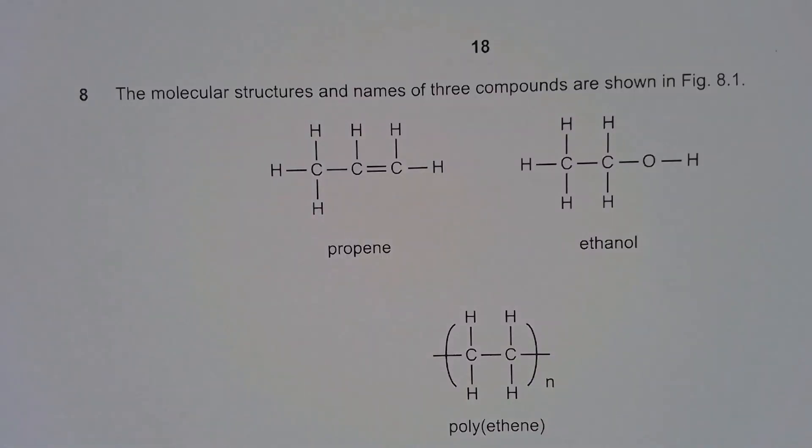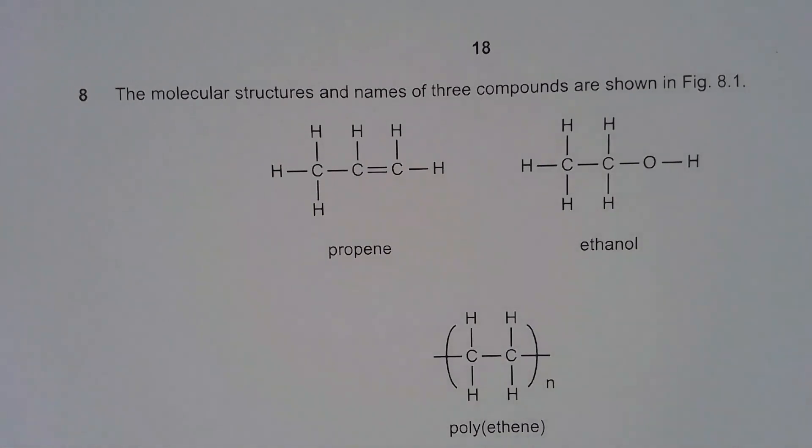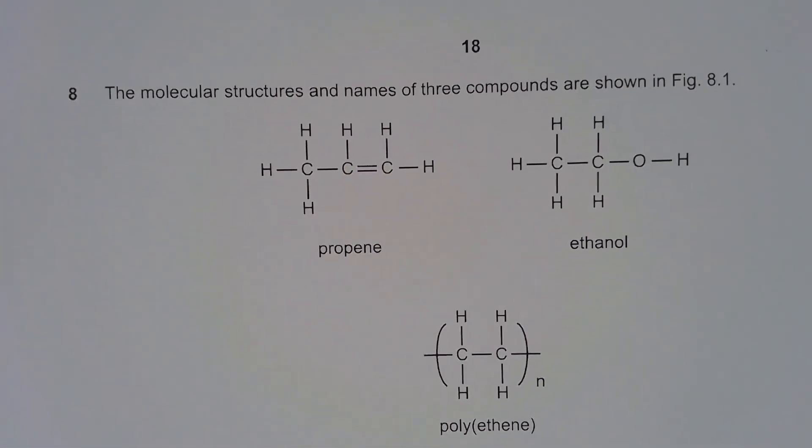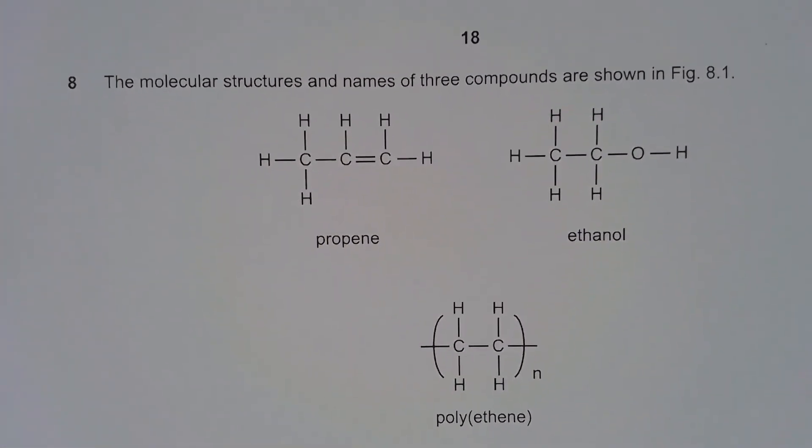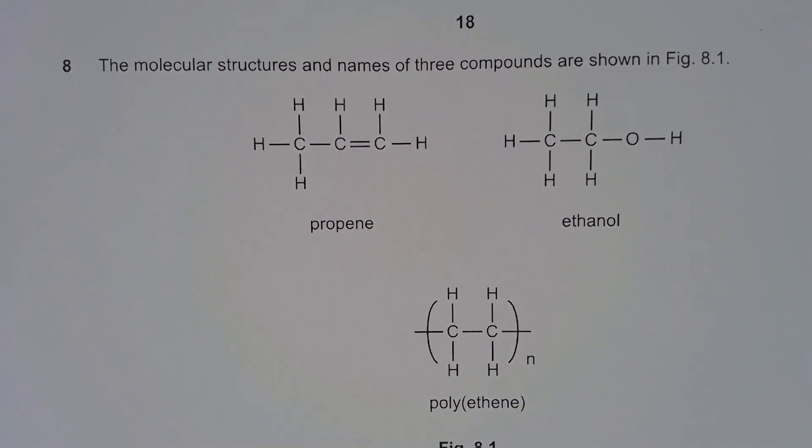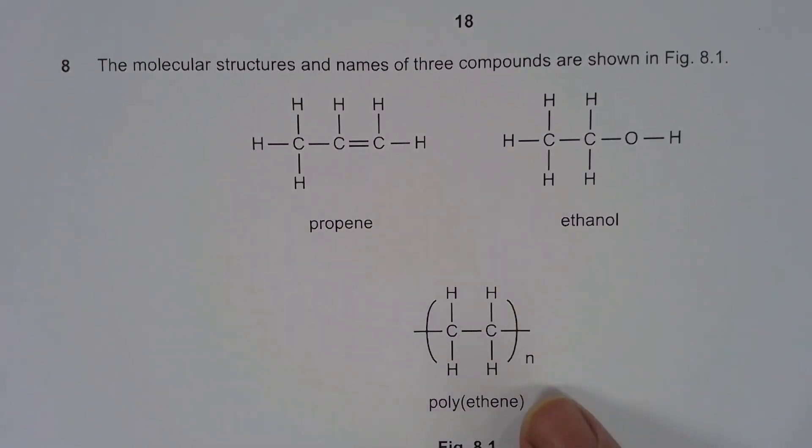Right, okay everybody, so your homework was to have a go at this particular paper. You've got molecular structures and names of three compounds shown in figure 8.1. So you've got propene, ethanol and polythene.